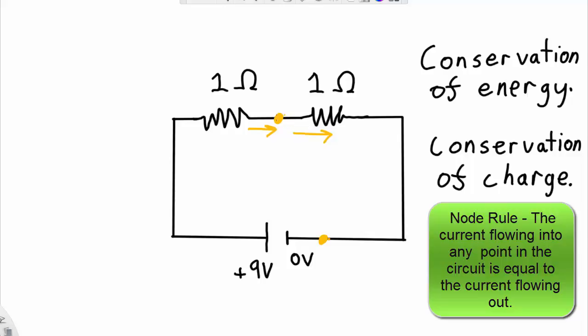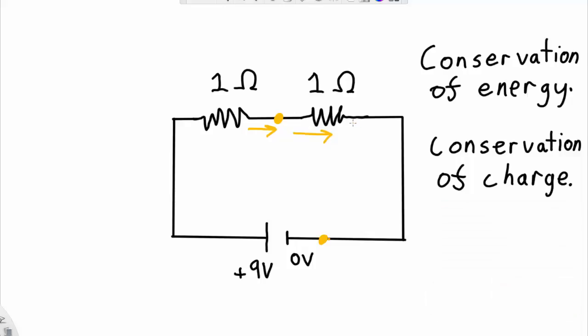And all that means is that there is going to be no charge building up at any point in the circuit. Therefore, the charge going in must equal the charge going out. So using these two rules, I can make all sorts of predictions about circuits.